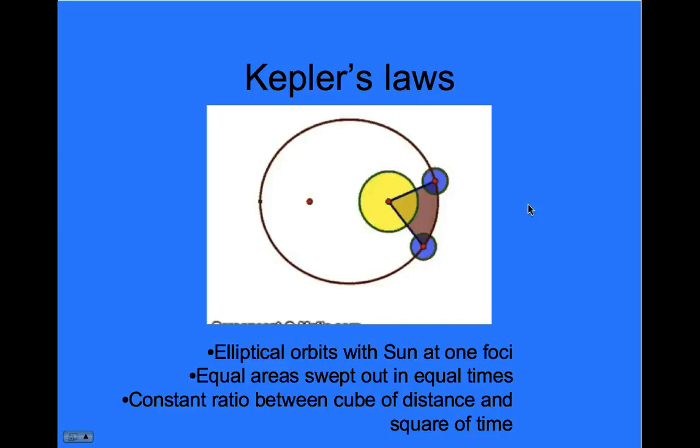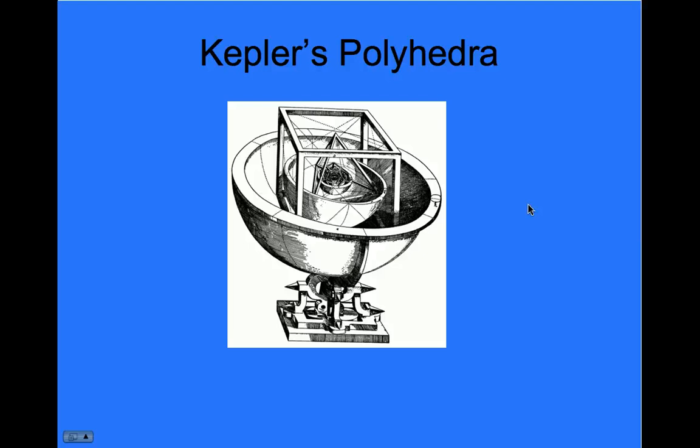It's a failed idea, but it's got a lot of cool math in it. He had a thought that the planets, the distances from the sun, could be modeled by inscribing, taking a sphere for Mercury.